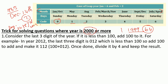For years 2000 or more, the first step is to look at the last three digits of the year. For example, for 2012 the last three digits are 012, which is just 12. Since 12 is less than 100, you add 100 to it, giving you 112. That is the first value. The second step is to divide that value by 4 and take only the whole number — 112 divided by 4 gives us 28. That is the second value.